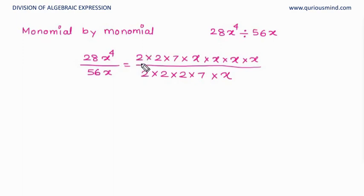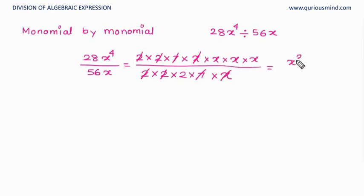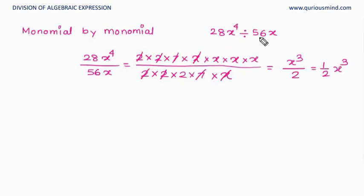Now let's cancel out the common factors. We have 2, 2, 2 from 28; and 2, 2, 2 from 56; then 7 and 7 cancel; and x cancels with one x. What remains is x × x × x in the numerator over 2, giving x cubed over 2. So the answer is one-half x cubed. When we divided the monomial 28x⁴ by another monomial 56x, we get (1/2)x³.